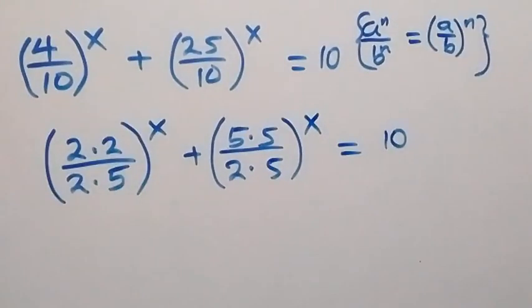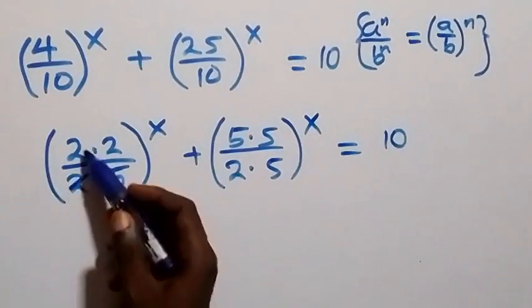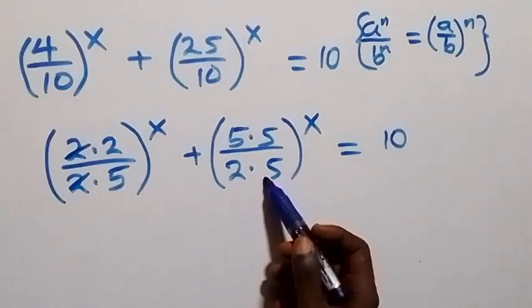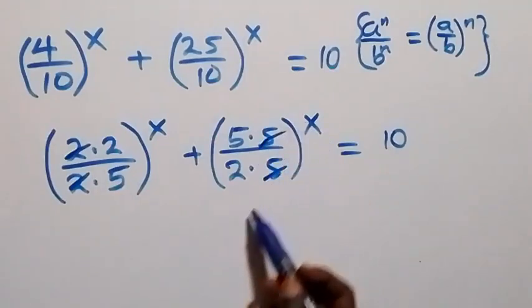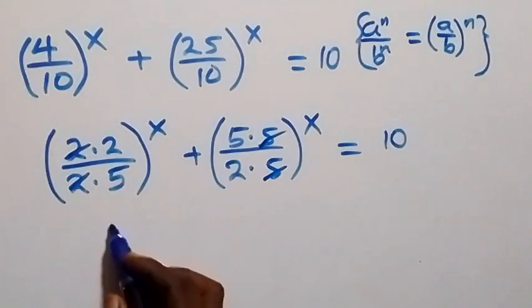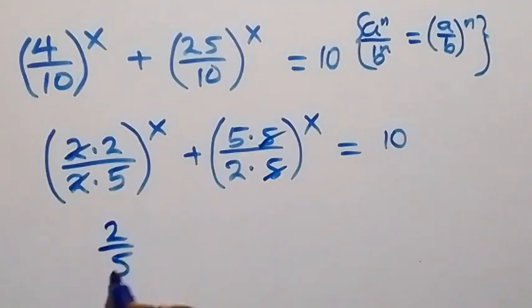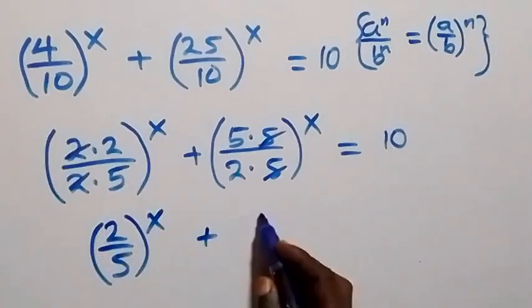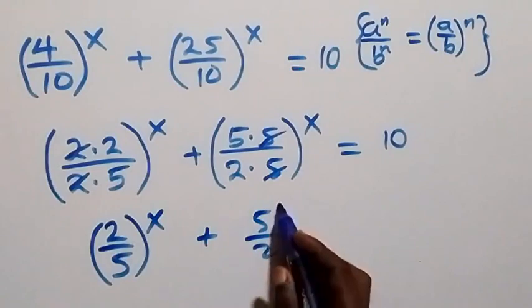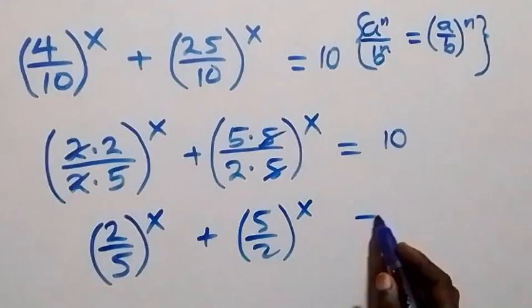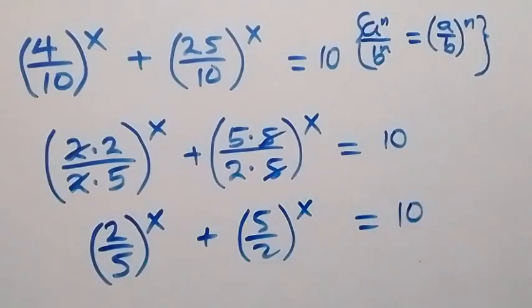The 2s cancel in the first term, leaving 2 over 5. The 5s cancel in the second term, leaving 5 over 2. So this becomes (2 over 5) all raised to power x, plus (5 over 2) all raised to power x, equals 10.